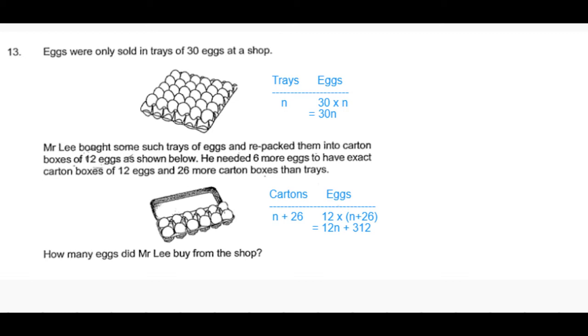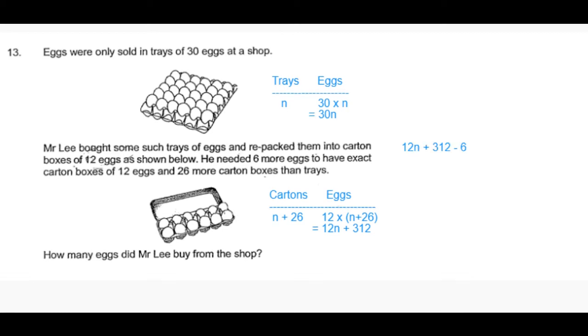It's given that he needed 6 more eggs to have the exact number of carton boxes, and all the carton boxes to be filled with 12 eggs. Which means the number of eggs he had was 6 less than the total number of eggs that could fill up the carton boxes.